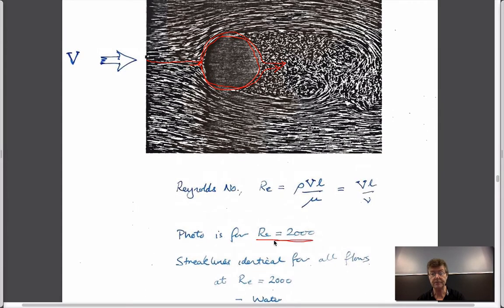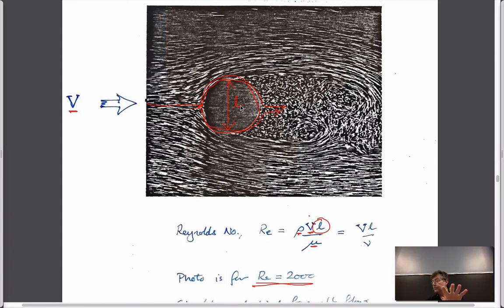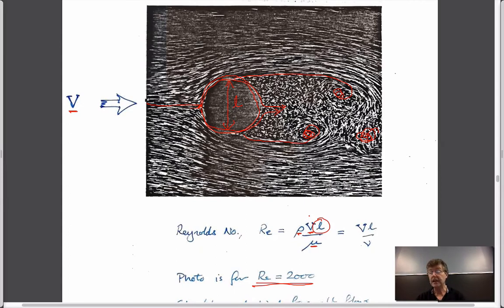The Reynolds number — in terms of the ratio of these forces — has an average flow velocity, a density of the fluid, a viscosity of the fluid, and some characteristic length, typically the diameter. If you have water going past this cylinder at a Reynolds number of 2,000, or treacle at Reynolds number 2,000, or air at Reynolds number 2,000, the format of the flow paths looks exactly the same at that particular Reynolds number. You see these little turbulent eddies developing. If you do it at a Reynolds number of 1, it would look quite different — it would look like creeping flow.